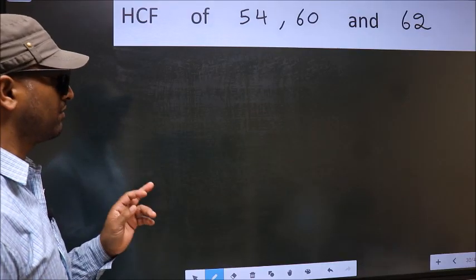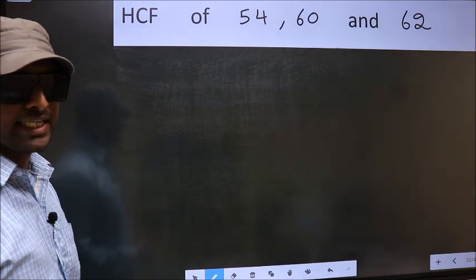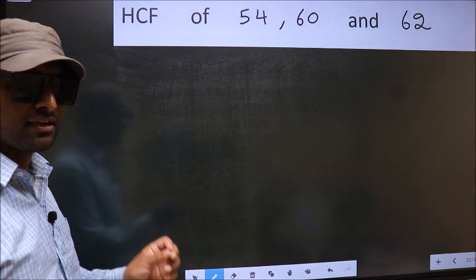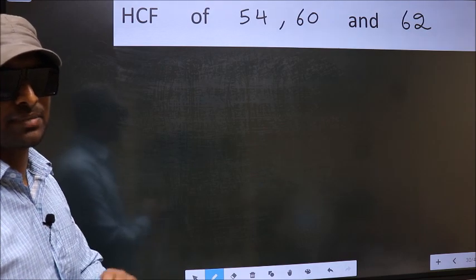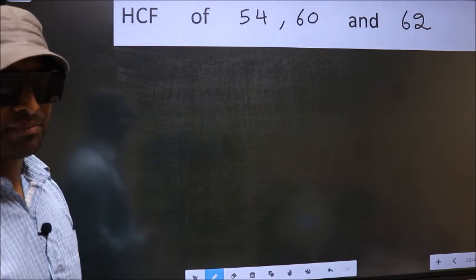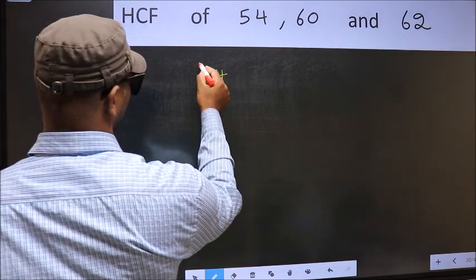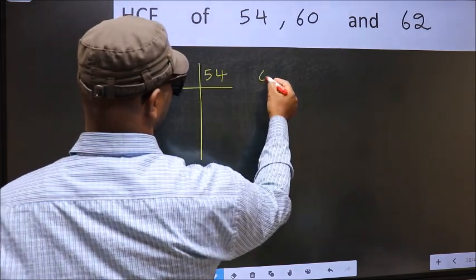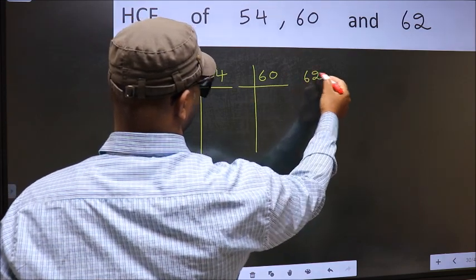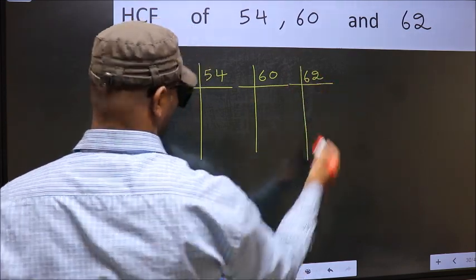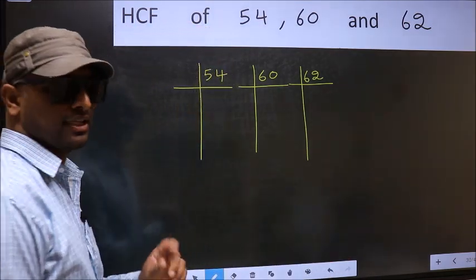HCF of 54, 60 and 62. To find the HCF, we should do the prime factorization of each number separately. What I mean is 54, 60, 62. This is your step 1.